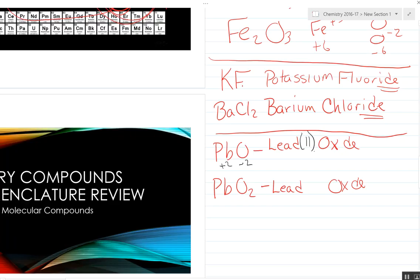Now on the second one, we have two oxygens for a net charge of negative four. So lead has to be plus four because there's only one of them. So this is going to be lead(IV) oxide.